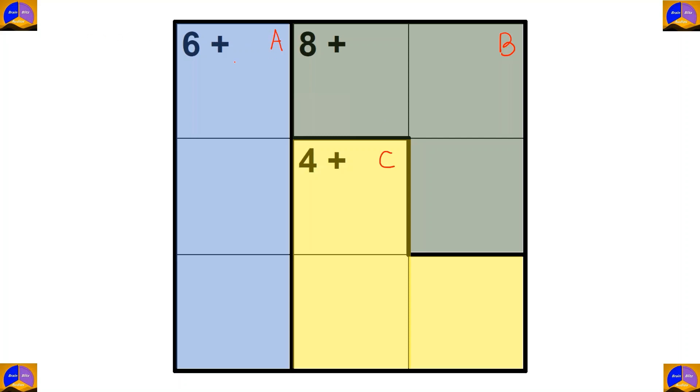In cage A there are 3 cells and the operation is addition. After adding, our result must be 6. So, the options, there is only one option, which is 1 plus 2 plus 3.